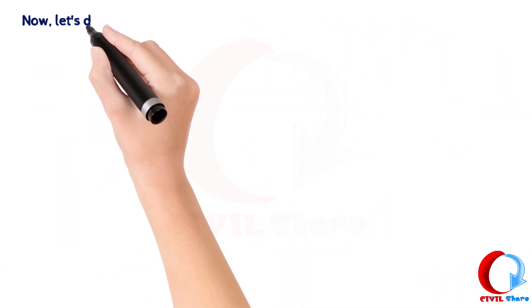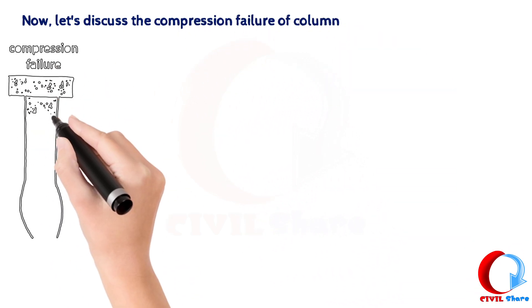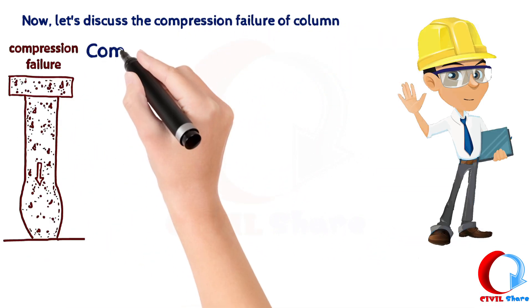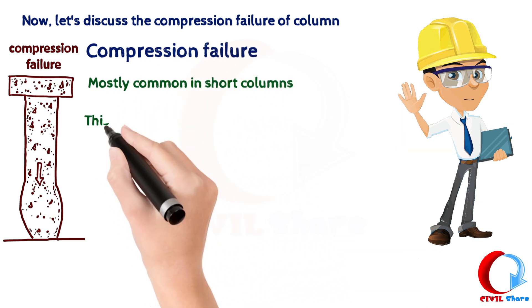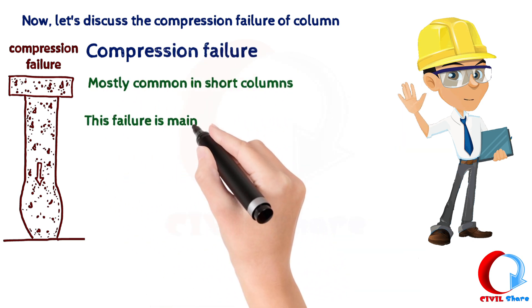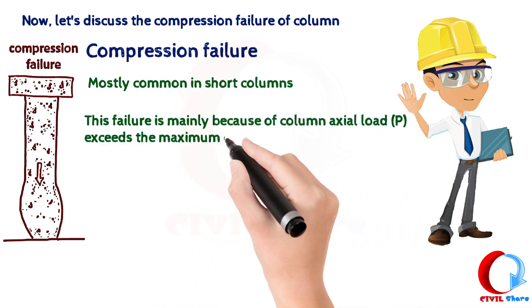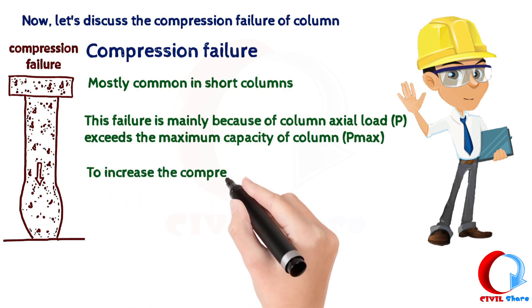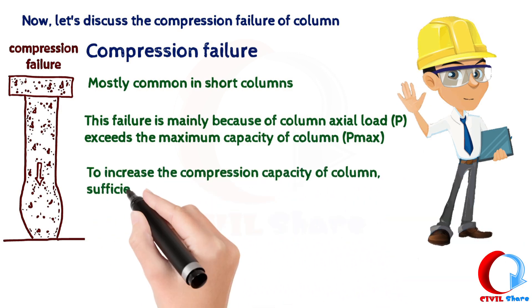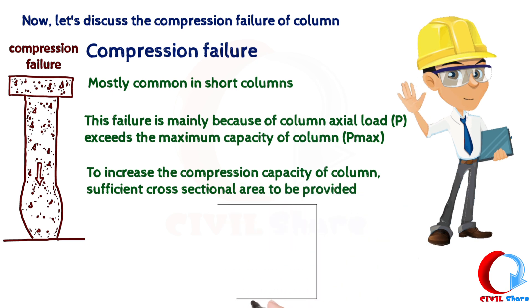Now let's discuss the Compression Failure of a column. Compression failure occurs when the column is overloaded in compression. To increase the compression capacity of a column, a sufficient cross-sectional area needs to be provided.